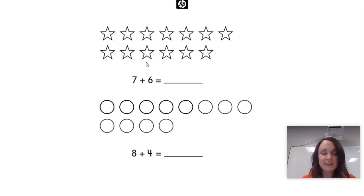Count out your seven stars. Put a circle around them and then you can count on. Seven, eight, nine, ten, eleven, twelve, thirteen.